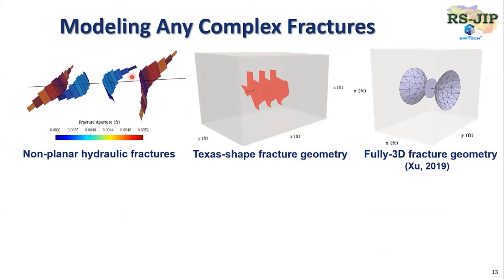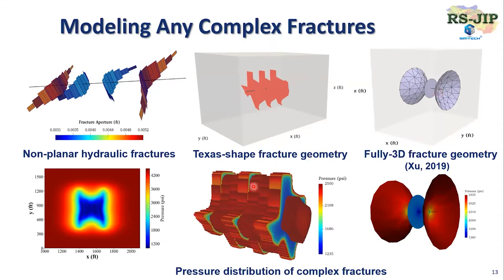I want to show that our EDFM can model almost any complex fractures. I show three examples. The first one is a non-planar hydraulic fracture with different height and different aperture. The second one is a synthetically generated textile-shape fracture geometry with a pretty complex fracture boundary. The third one is a fully 3D fracture geometry. With our EDFM, you can easily do well performance simulation of all this complexity. Hopefully our textile-shape fractures can produce more oil and gas.